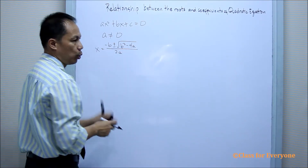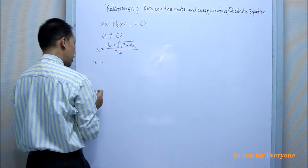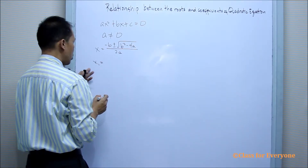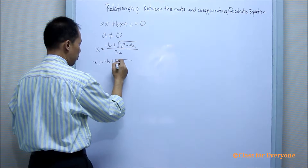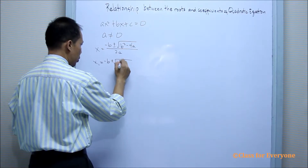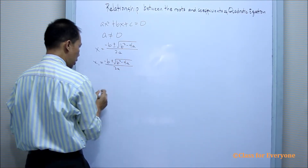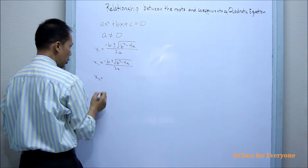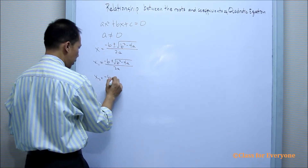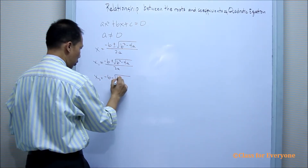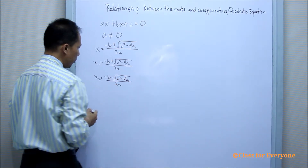Therefore, we have two roots. We denote x₁ as negative b plus the square root of b squared minus 4ac, all over 2a. And then for the second root, x₂ is negative b minus the square root of b squared minus 4ac, all over 2a.